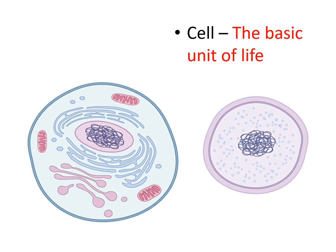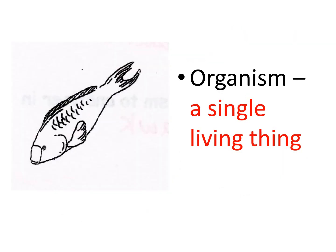If we go a step further, cells make tissues, tissues make organs, organs make organ systems, and organ systems make an organism. An organism is a single living thing — one individual.